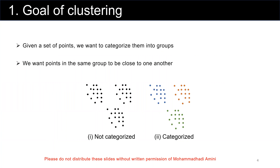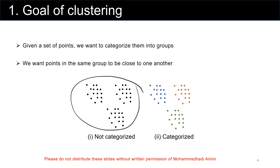Given a set of points — these are data points — this could be any real-world data collection. It could be patient information in a hospital, it could be data about vehicles driving in transportation networks, and so on. We want to categorize these data points into groups, or in other words, we want to cluster them. We want the points in the same group to be close to one another in terms of features, characteristics, and sometimes even geographical location.